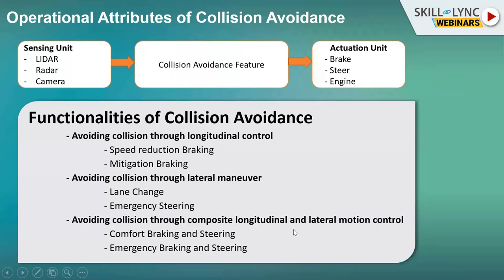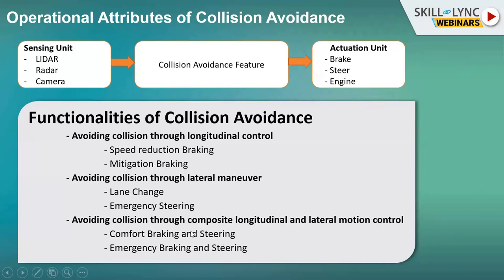Longitudinal control is dependent on the braking functionality of the vehicle — it could be speed reduction braking or mitigation braking. The lateral maneuver depends on the steering system and could involve a lane change or emergency steer. When we combine both features — longitudinal and lateral — involving both braking and steering, that is composite longitudinal and lateral motion control, which could be comfort braking and steer or emergency braking and steer.